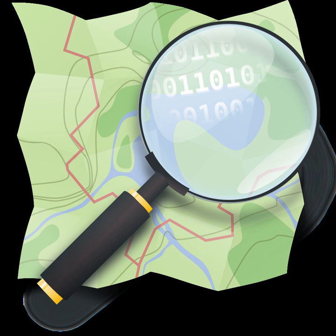In February 2015, OpenStreetMap added route planning functionality to the map on its official website. The routing uses external services, namely OSRM, GraphHopper and MapQuest. There are other routing providers and applications listed in the official routing wiki.